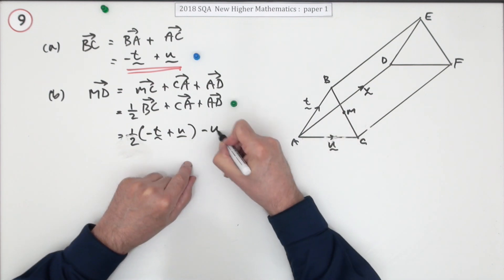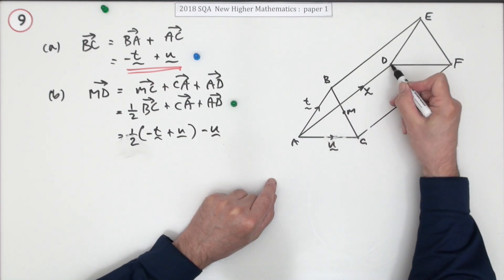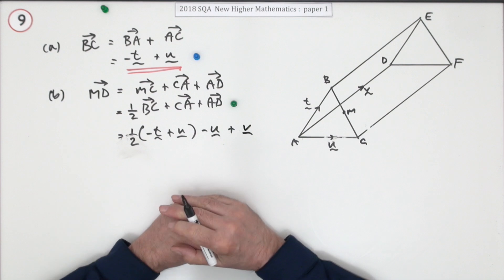CA against U. AD, that was that V that hadn't had a shot yet. Now it comes in.